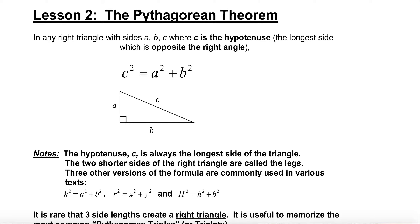Lesson two: the Pythagorean theorem. We'll go over this as if you don't remember anything. The Pythagorean theorem is a really useful tool when we're looking at right angle triangles — one of the corners has to have a 90-degree corner, and usually that is marked with a little box.